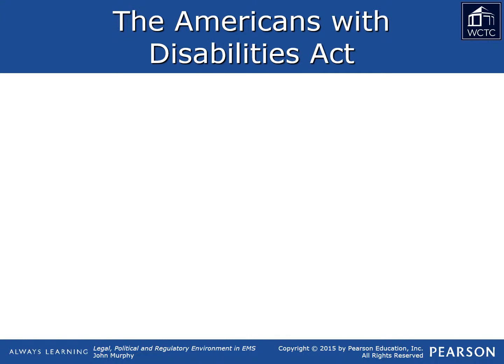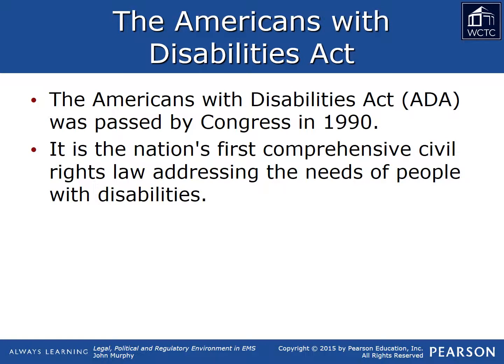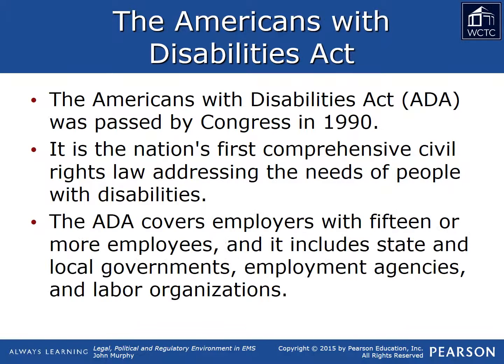Another federal law that impacts the employment relationship substantially is the Americans with Disabilities Act. Passed in 1990, the ADA was the nation's first comprehensive civil rights law that addressed the needs of individuals with disabilities. The ADA applies to any employer with 15 or more employees. Title I of the ADA prohibits discrimination against qualified individuals with disabilities in job application procedures, hiring, firing, advancement, compensation, job training, and other terms, conditions, and privileges of employment.